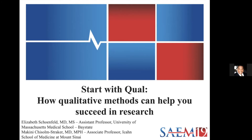Dr. Chisholm-Staker is a research faculty member at the Icahn School of Medicine at Mount Sinai. She received qualitative and quantitative training through completion of a master's in public health at Columbia University and has received federal and foundational grant support. Working with and within invisible populations, Dr. Chisholm-Staker has published original work using qualitative and quantitative methods to better understand the needs of labor and sex trafficked persons, homeless youth, transgender and gender non-conforming individuals, and unaccompanied and separated minors.